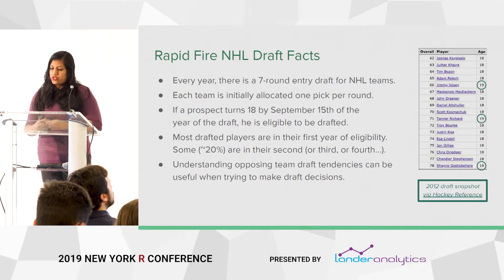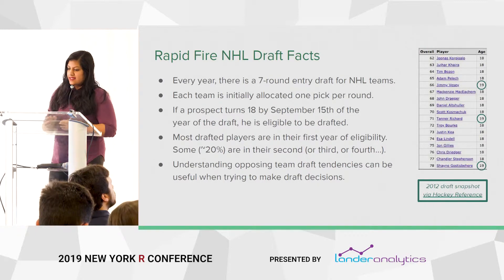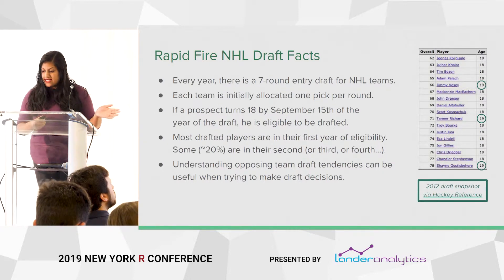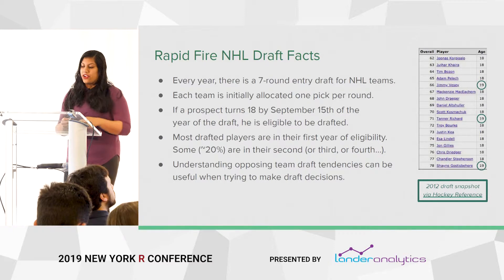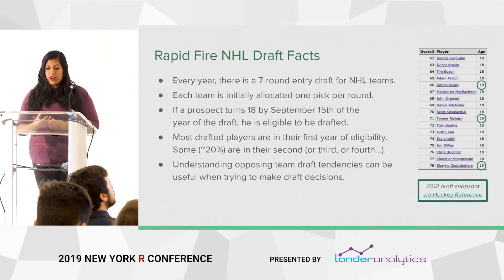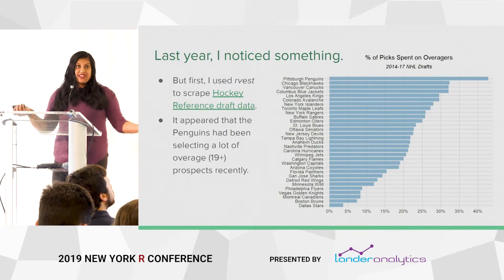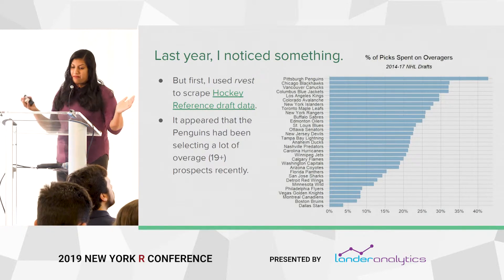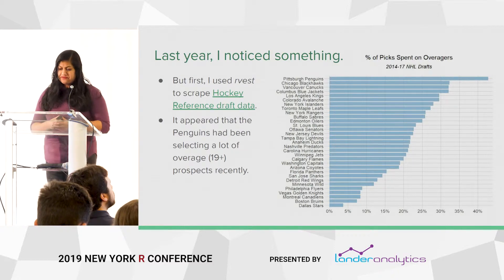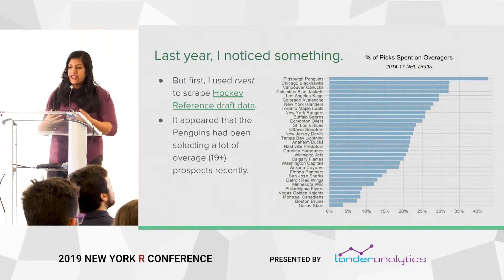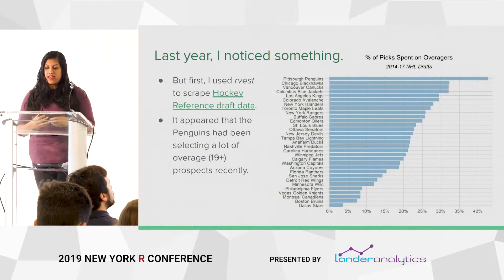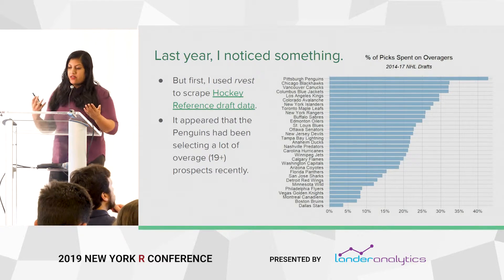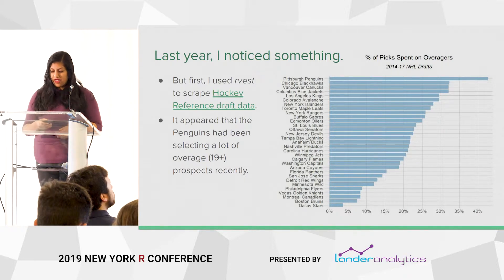I have a snapshot of the 2012 draft, third round — picks 62 to 78. Most of these guys are 18, but three were 19. One of those players, Shane Gostisbehere, ended up being a very good defenseman for the Flyers, so overage picks do work out on occasion. Before the 2018 draft, I noticed something, but first I had to use rvest — which is amazing — to scrape draft data from Hockey Reference. What I noticed with respect to overage prospects is that the Penguins, in the last few years, had been selecting a lot of them, more so than any other team in terms of percentage of all the picks they had.